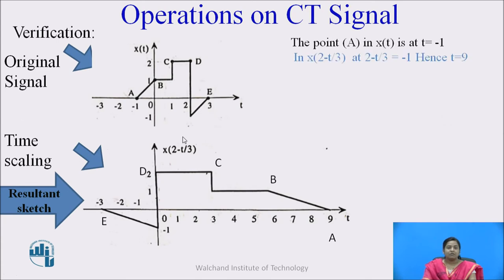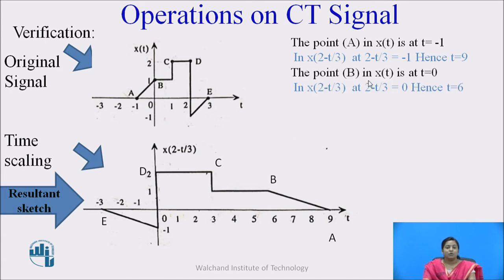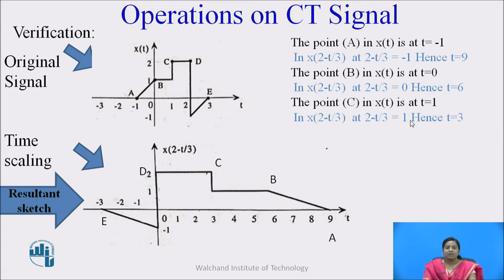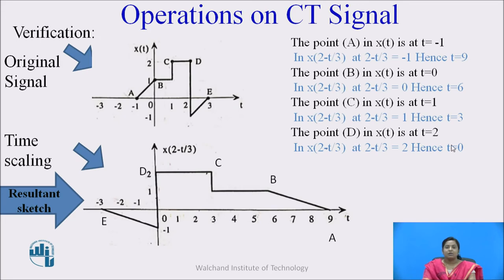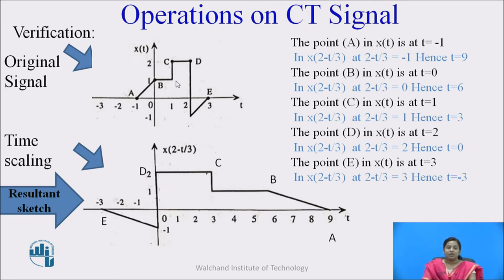We can verify the answer. Point a in x(t) is at t = -1; in x(2 - t/3), setting 2 - t/3 = -1 gives t = 9. Point b in x(t) is at t = 0; in x(2 - t/3) it will be at t = 6. Point c is at t = 1 in x(t); in x(2 - t/3) it will be at t = 3. Point d will be at t = 0 and point e will be at t = -3. In this way, you can verify your answer.